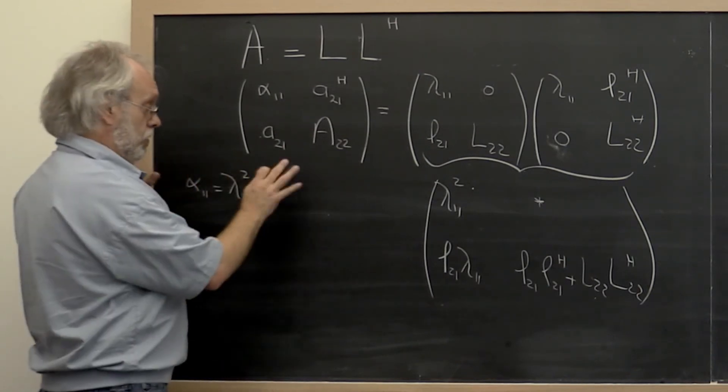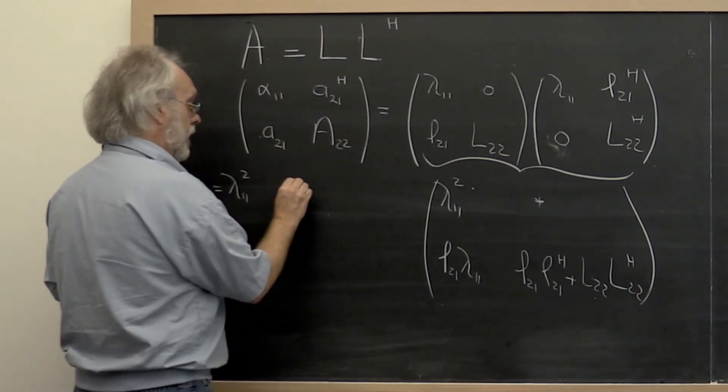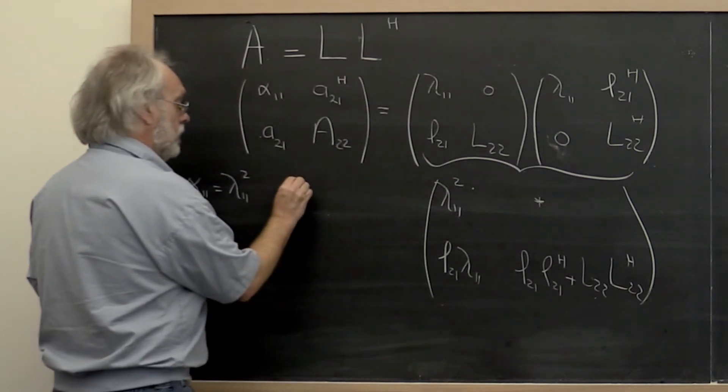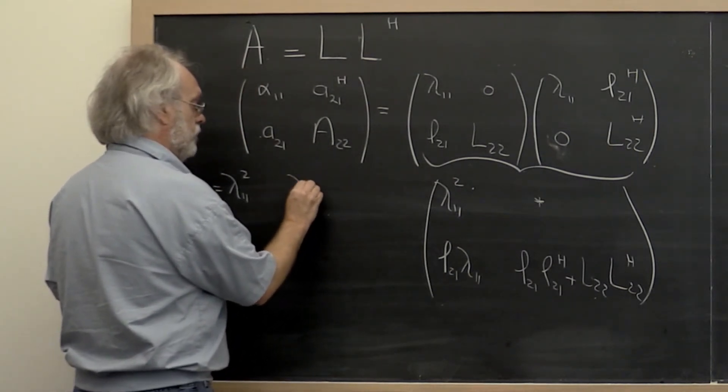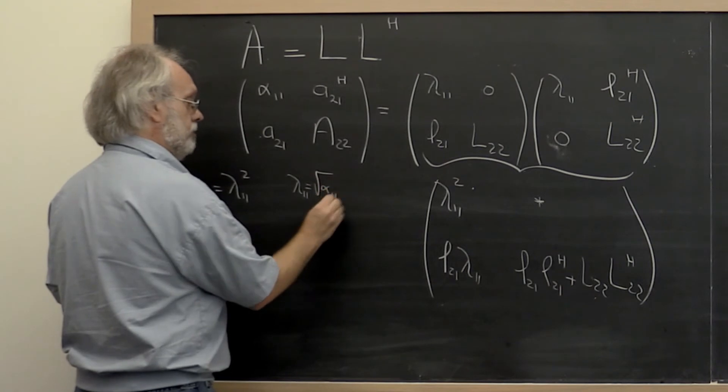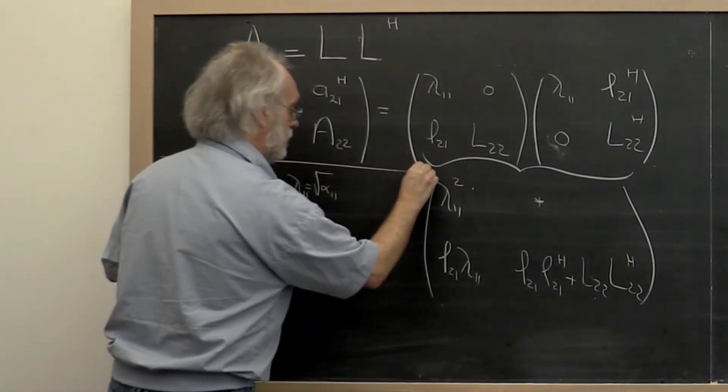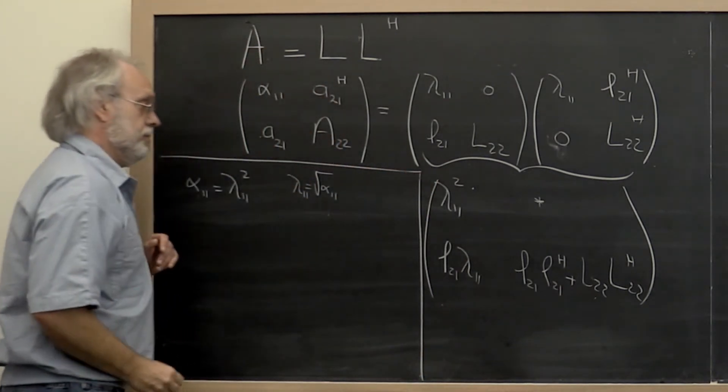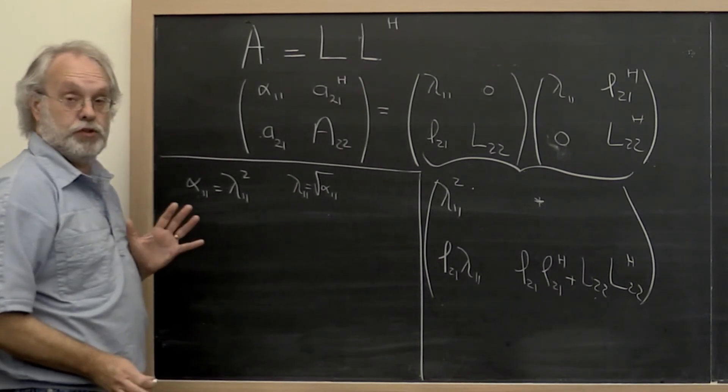So all of this is all good. So we can take our lambda_1,1 to be equal to the square root of alpha_1,1. Our algorithm now is going to appear right here. So far so good?